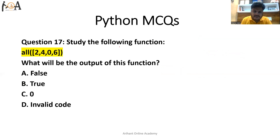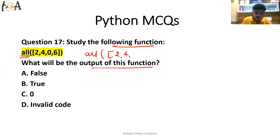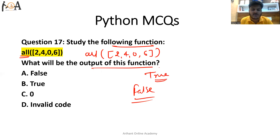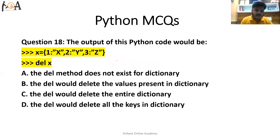Question number 17: study the following function — what will be the output? The function is all(), and inside we have 2, 4, 0, 6. The all() function checks whether all values inside the list are non-zero. If there is even a single zero value, it returns False, indicating a zero exists. Here we have a zero inside, so it is going to return False.